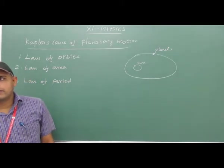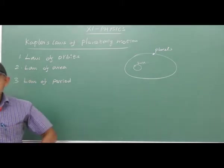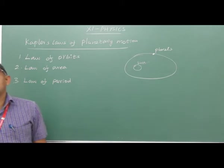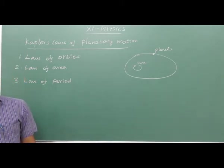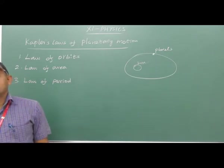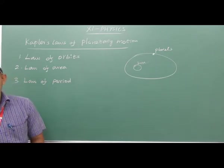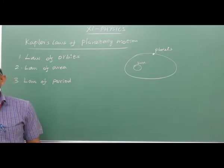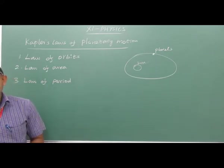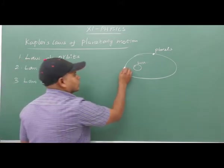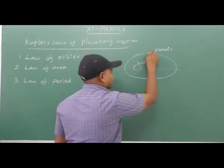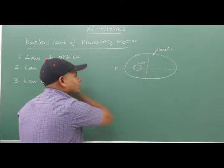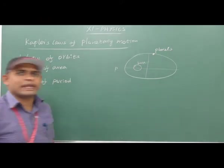In the path of the orbit, the closest point of approach of the planet to the sun, P, is called perihelion. Perihelion is the closest point to the sun.